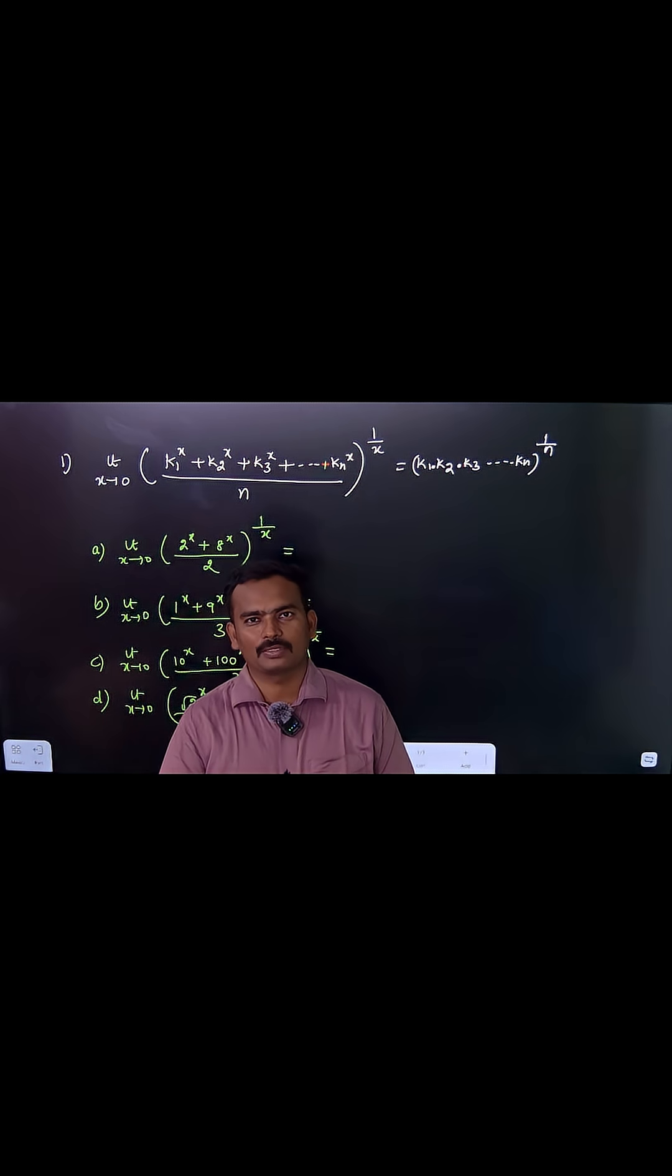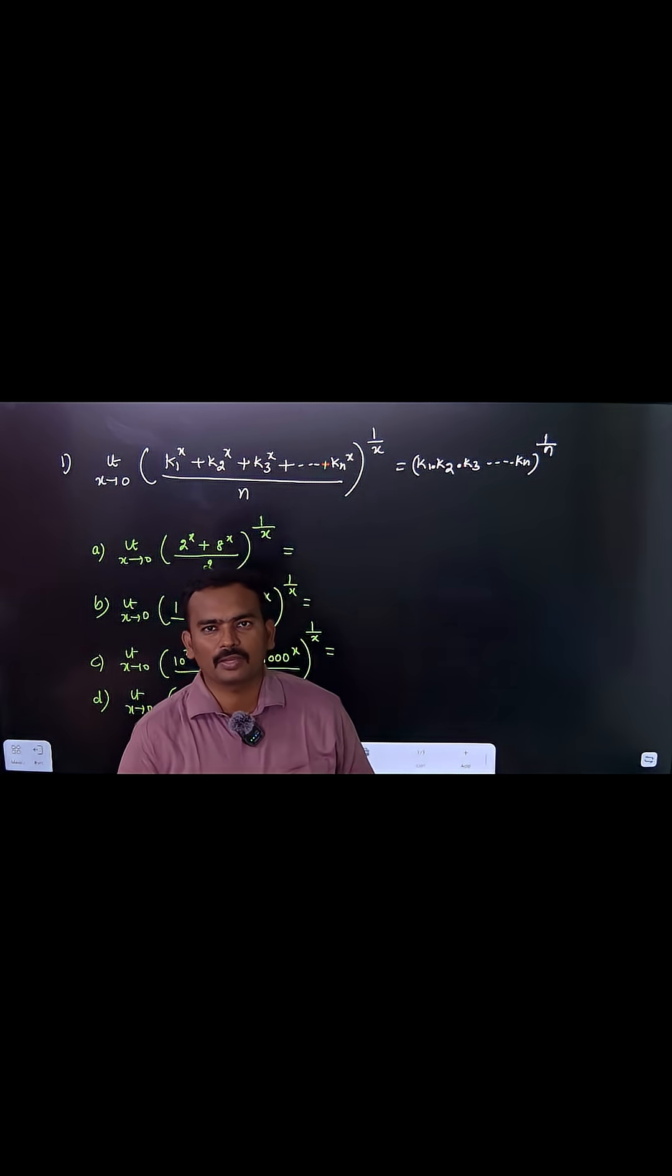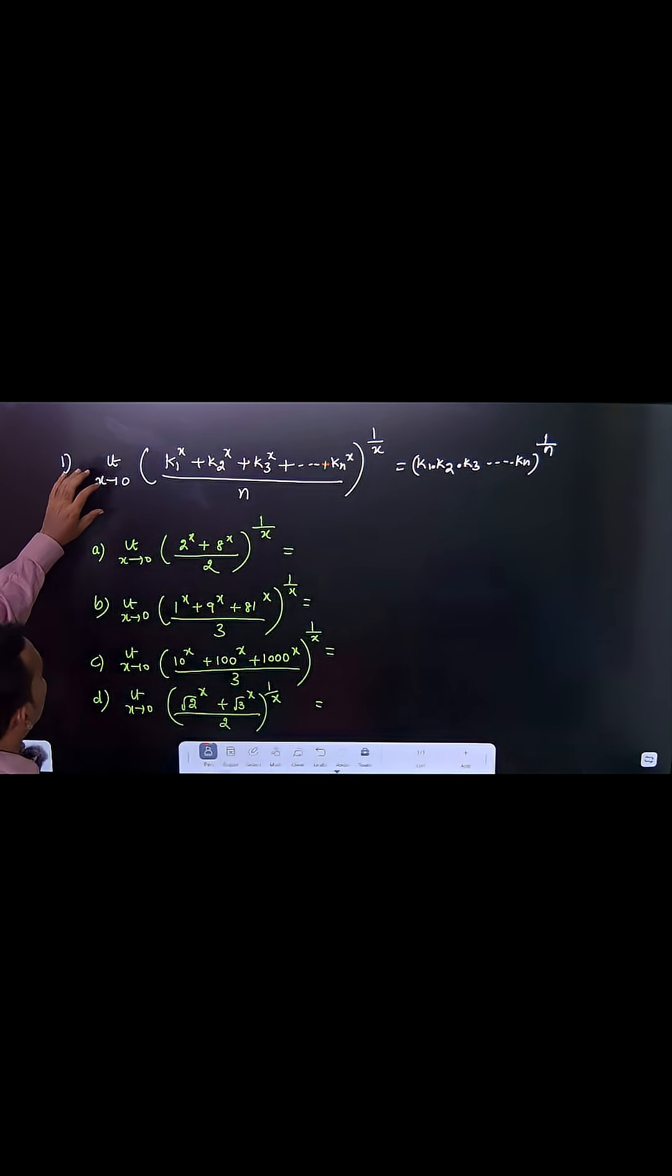Hi everyone, I am Praim Kumar. Welcome to Math J Academy. Today I am going to teach you a very interesting trick on limits: limit as x goes to zero of (k1^x + k2^x + k3^x + ... + kn^x)/n, whole raised to the power 1/x.